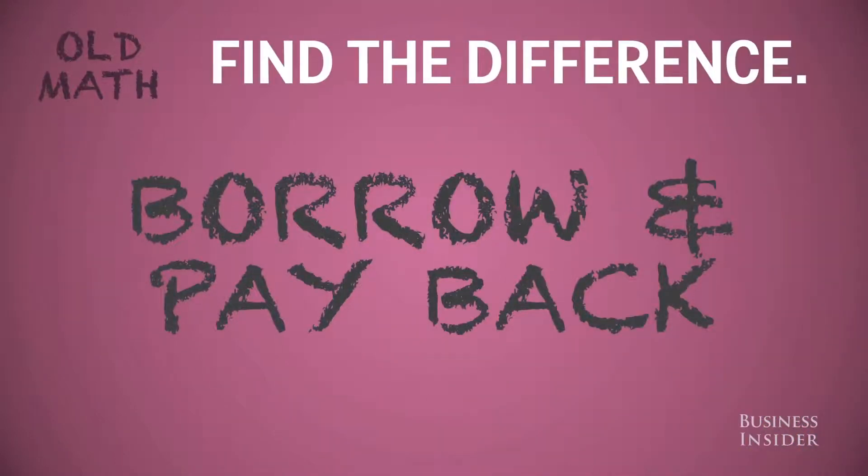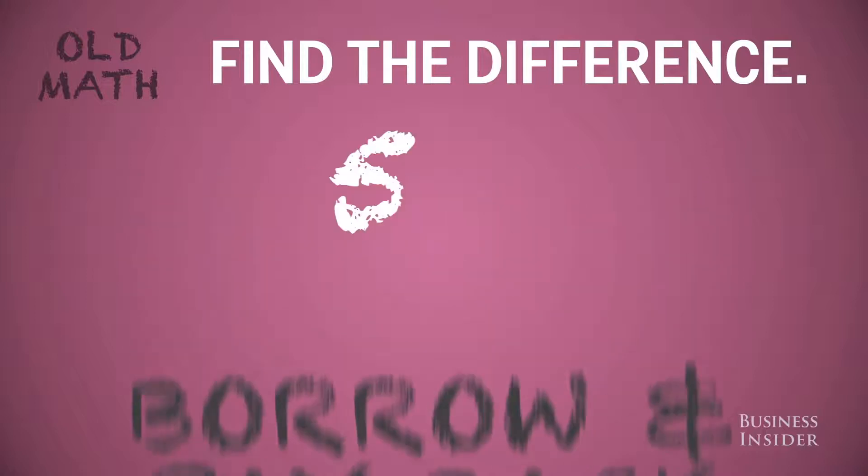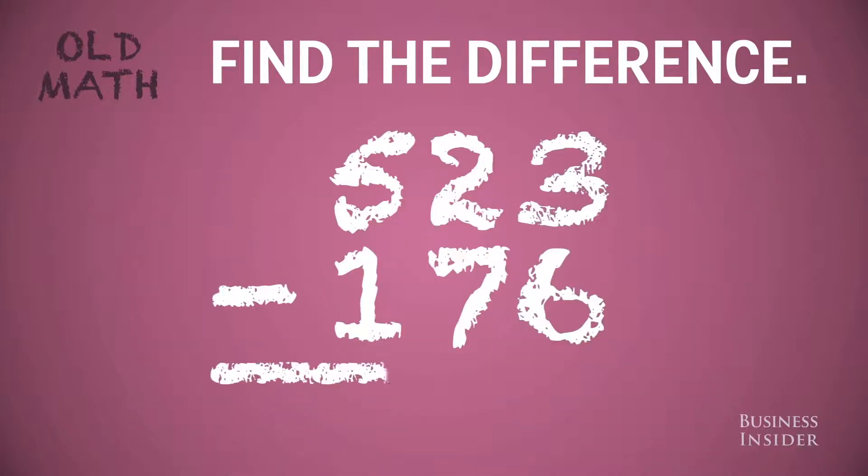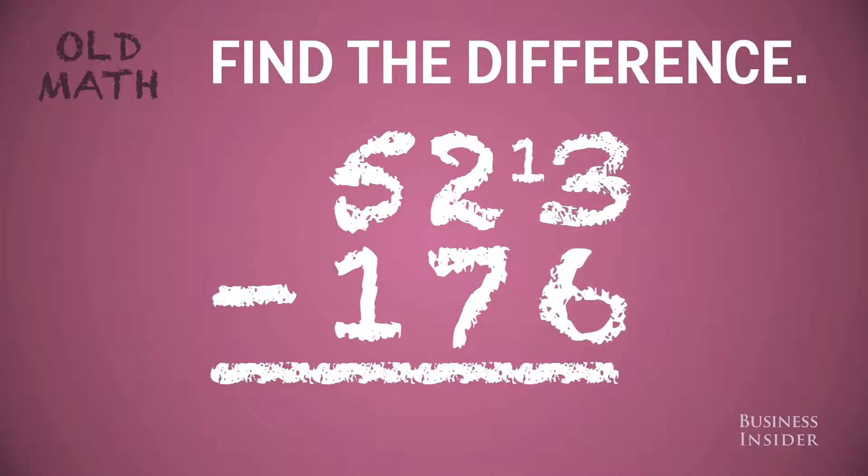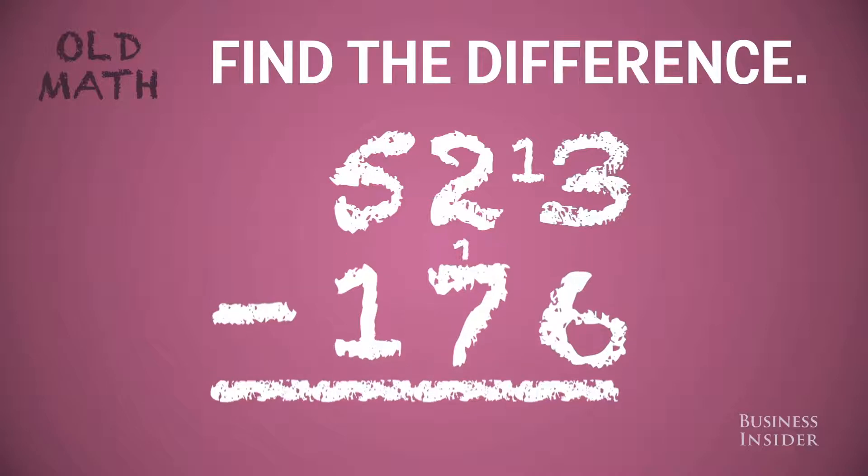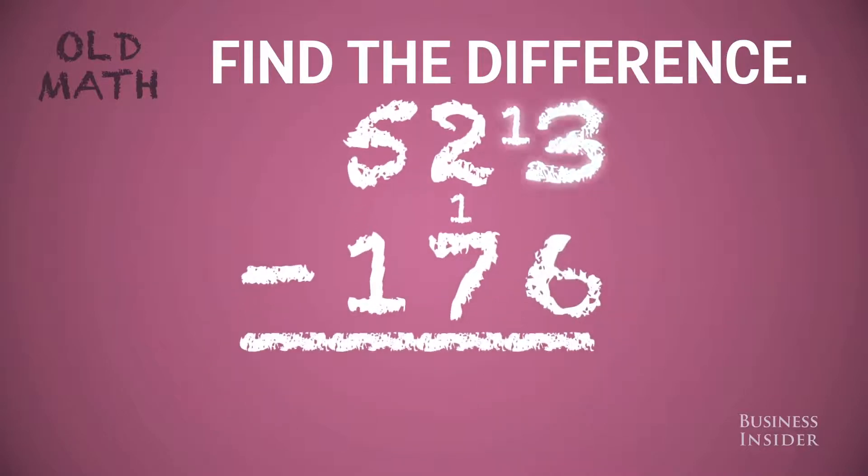If you learned subtraction in the 1950s, you may have learned the borrow and pay back method. Start on the right in the ones place. Since you can't take 6 from 3, you need to borrow from the tens to make this 13, and pay it back by subtracting an additional 1 here. Now 6 from 13 is 7.